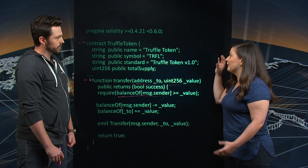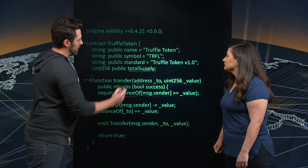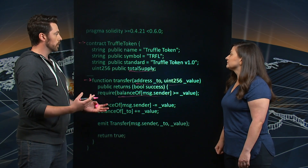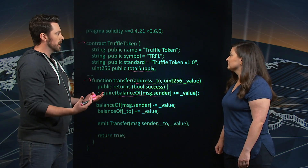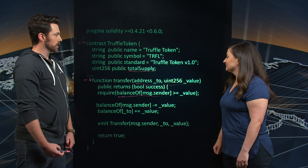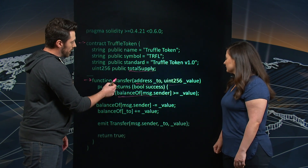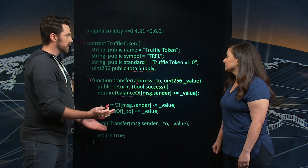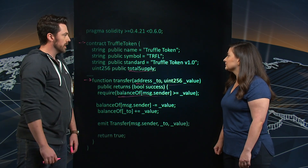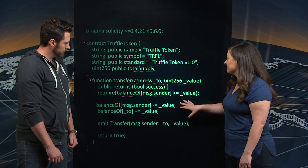We're using the total supply parameter to specify the amount of tokens created as part of the contract. There's a value called total supply, set in the contract constructor when deployed. The constructor says this contract is going to hold, say, 100,000 tokens and no more than that. Personally my address might hold 10,000, but when the contract is deployed, those 100,000 are set in the contract.